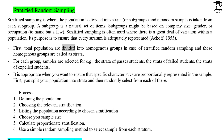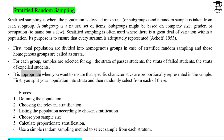In stratified random sampling, the total population is divided into homogenous groups called strata. For each group, samples are selected — for example, the strata of passed students, the strata of failed students, and the strata of expelled students. It is appropriate when you want to ensure that specific characteristics are proportionally represented in the sample.